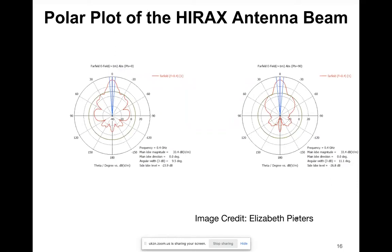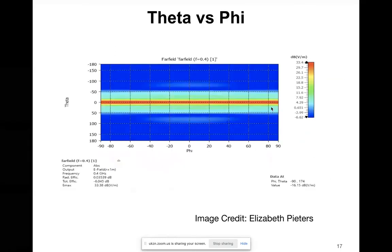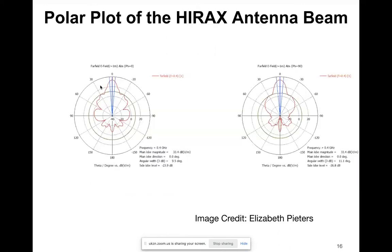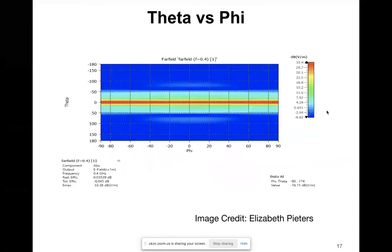These simulations were done by Elizabeth Fitters. This is a plot of theta as a function of phi. This plot is somewhat misleading in that it suggests our beam is symmetric, but looking at the two individual cut plots, the half-power beam width is 9.5 degrees at phi zero and 11.1 degrees at phi 90 — so it's not a good representation of the asymmetry of our beam.